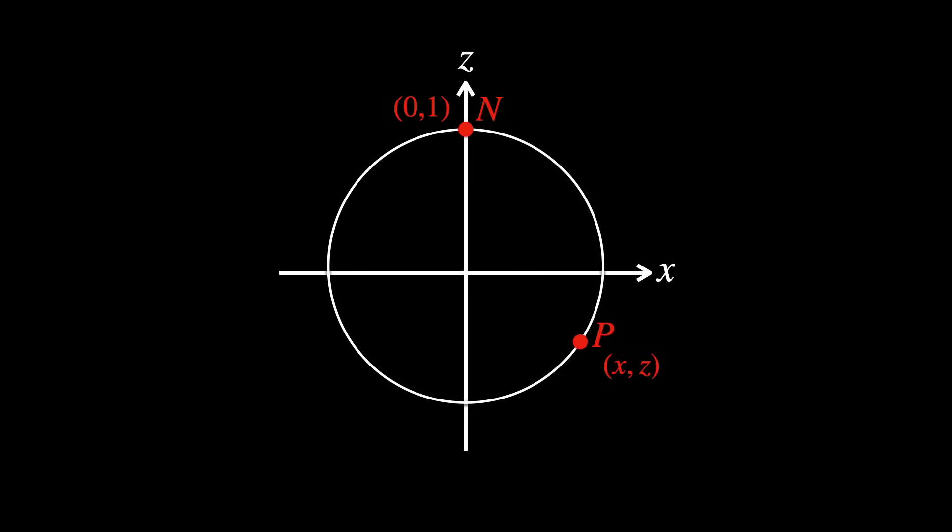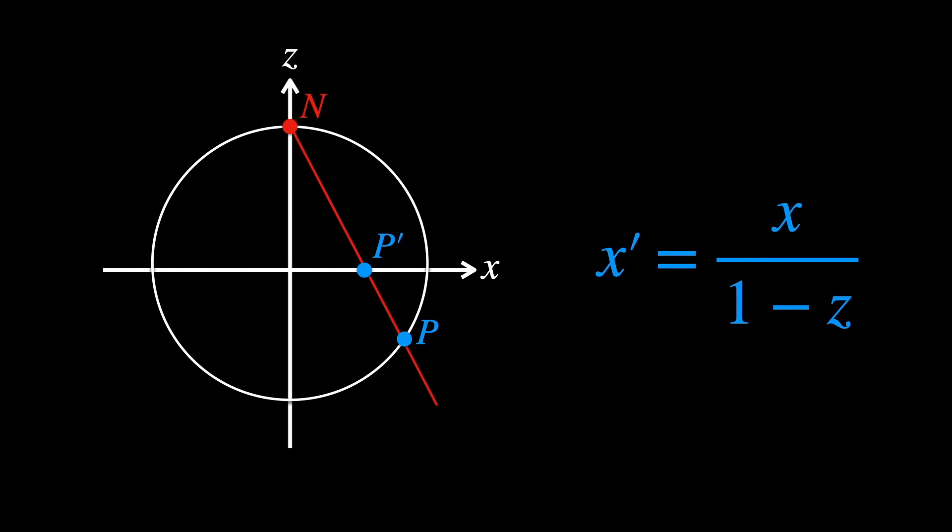Now, pick any point P with coordinates (x, z) on the circle and draw a straight line from N through P. Extend this line until it intersects the x-axis. The coordinates of P' can be determined by solving the equation of the line for where it intersects z equals zero. So P on the circle maps to P' on the line using this formula.